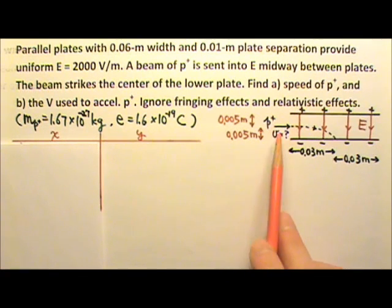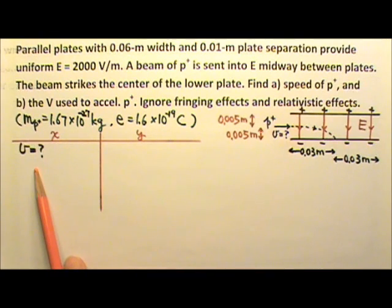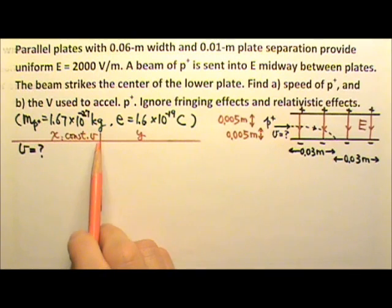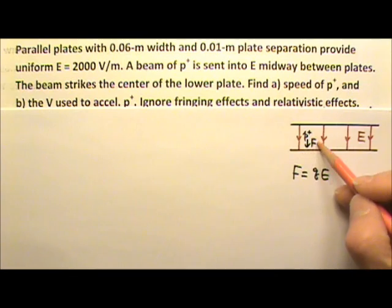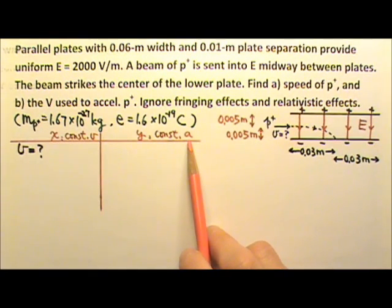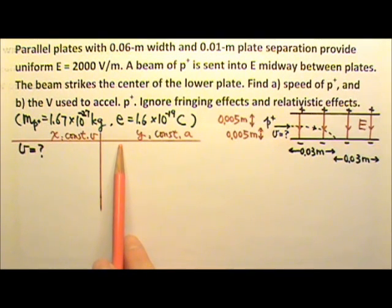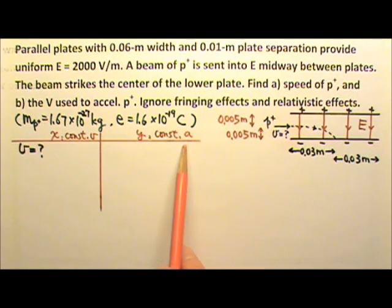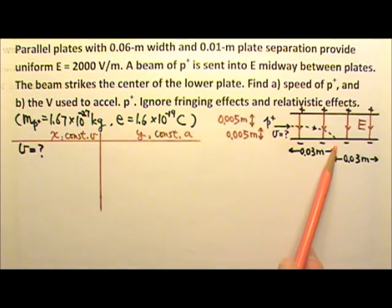The proton has an x direction initial velocity, and that is what we are looking for in part A. Since there is no x direction acceleration, the proton does constant velocity motion in the x direction. In the y direction, we have constant acceleration motion. Does this remind you of projectile motion? Projectile motion also has constant velocity motion in one direction and constant acceleration motion in another direction. So the trajectory of this proton beam is a parabola, just like a projectile.